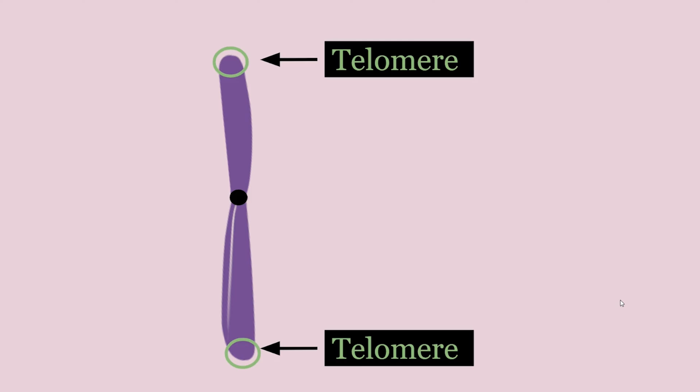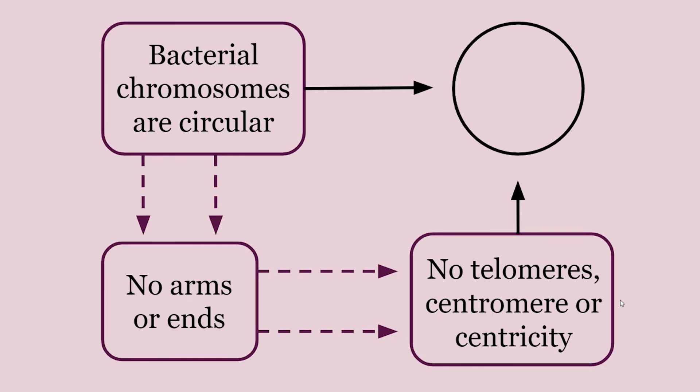At the end of each arm is a telomere. These are the ends of your chromosomes. Because bacterial chromosomes are circular, they have none of these. No telomeres and no centromeres.